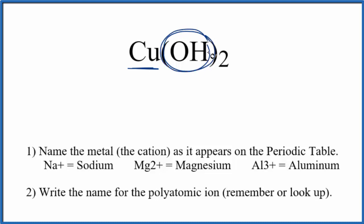...it's called the hydroxide ion. So the hydroxide ion, we have two of them, is bonded to the copper here. Since we have copper, which is a metal, and this group of non-metals in the polyatomic ion, this is an ionic compound.